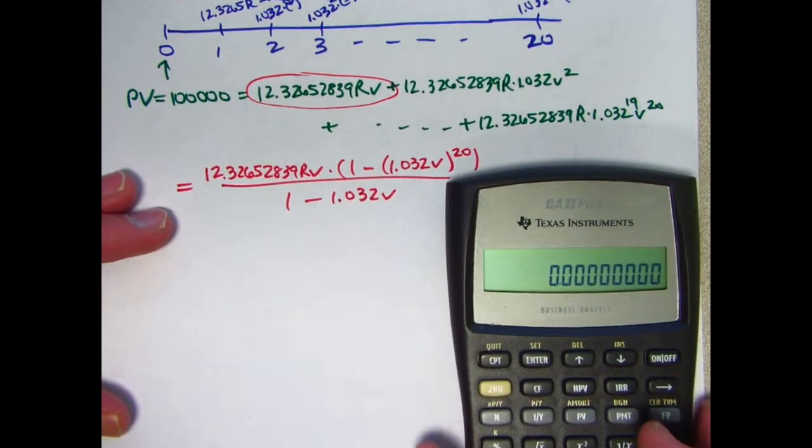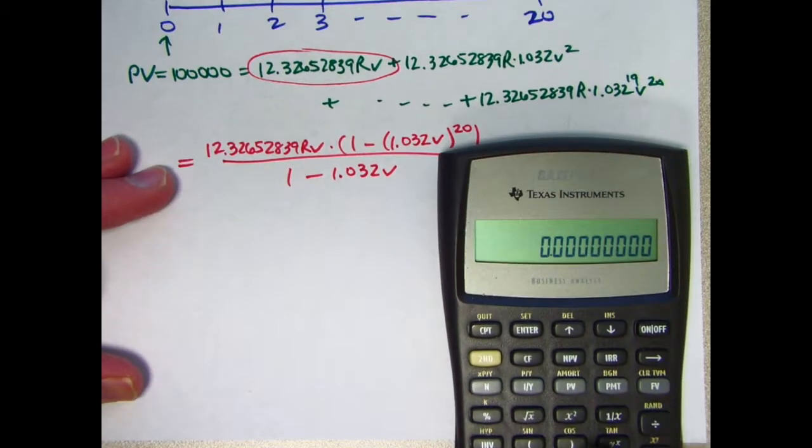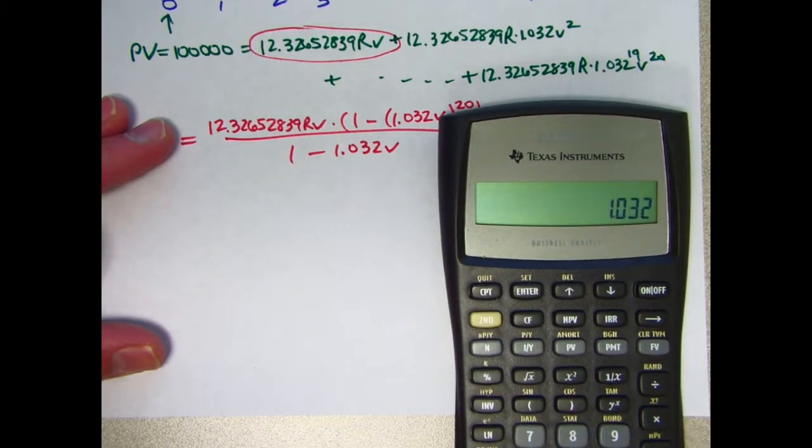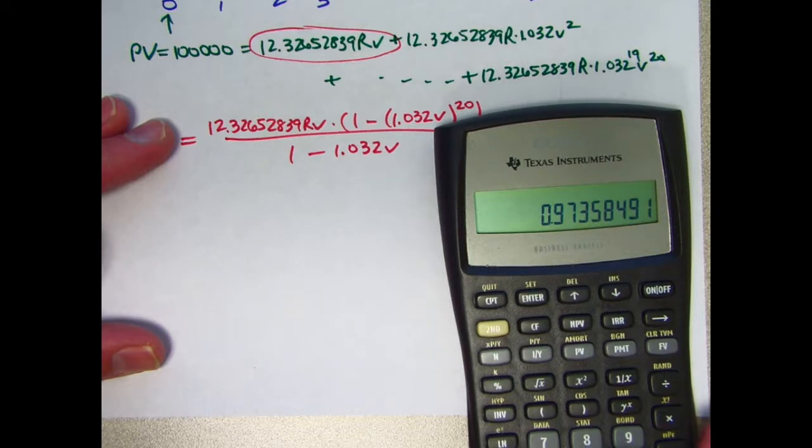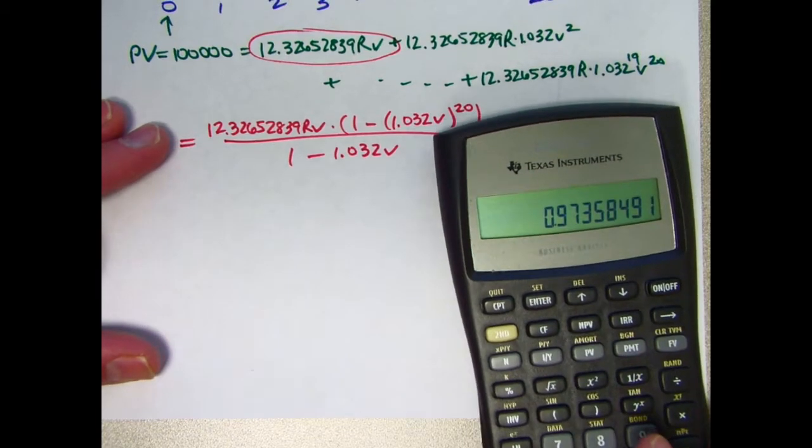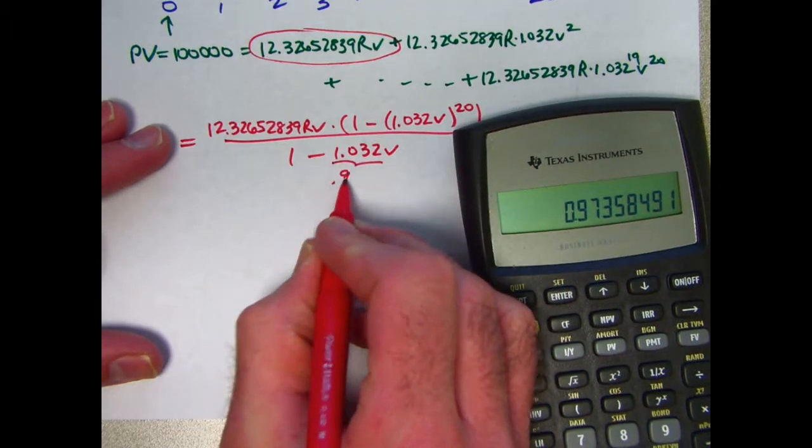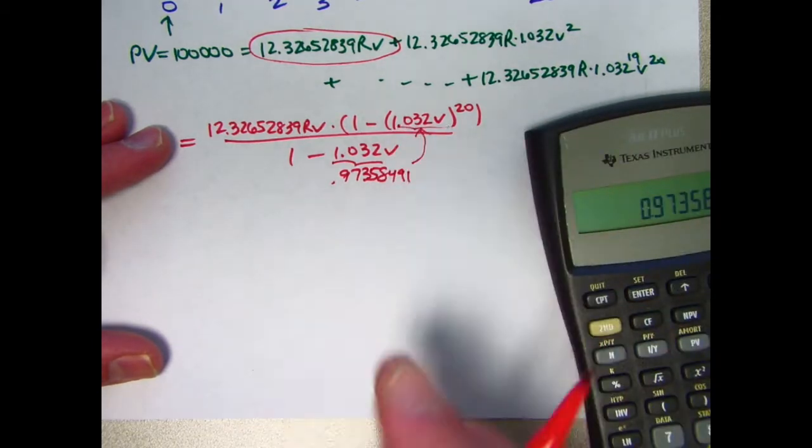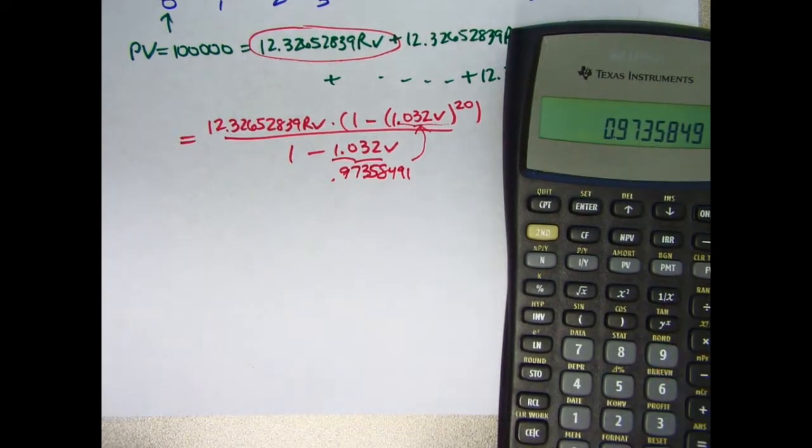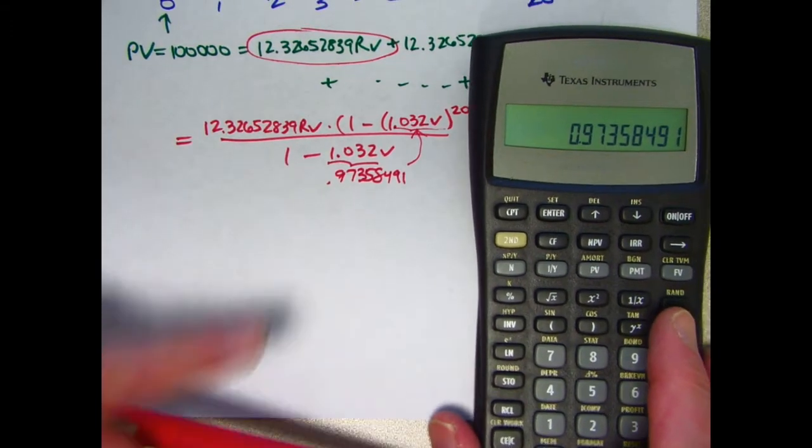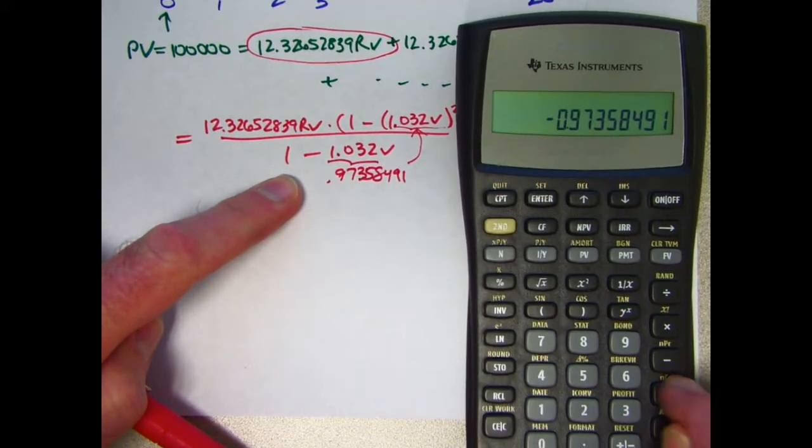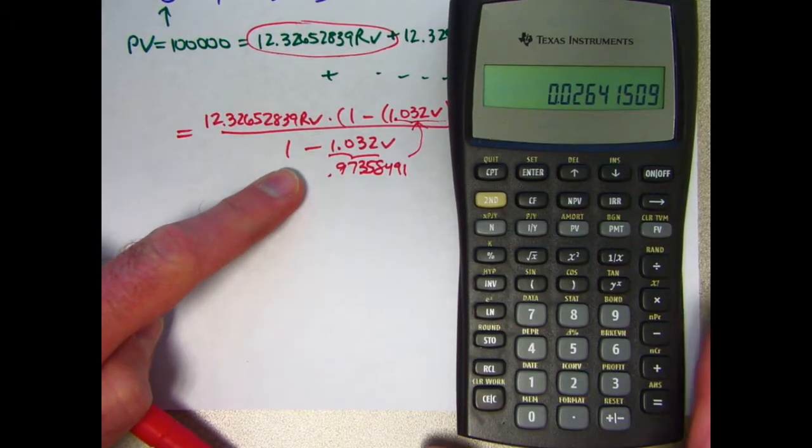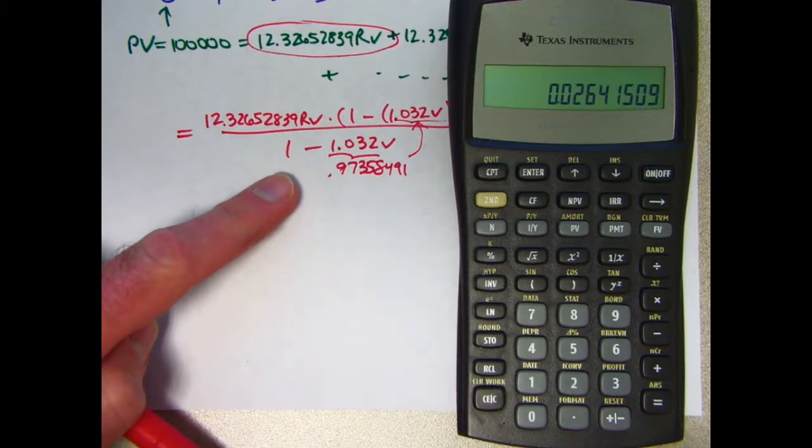Alright, so let's see here. What's 1.032 times V? V was in register 0. So I'm recalling it there. That's V times 1.032. Okay, so that's 1.032 times V. Maybe I want to store that in register 1. Let me also write it here. This thing is 0.97358491. And that's also this thing that's getting raised to the 20th power. Okay, let's go ahead and do the bottom first. Let's subtract this from 1. So there's what's in the bottom of the fraction. Maybe I'll store that in register 2. You might want to write it down too, but I'm going to remember it's stored in register 2.